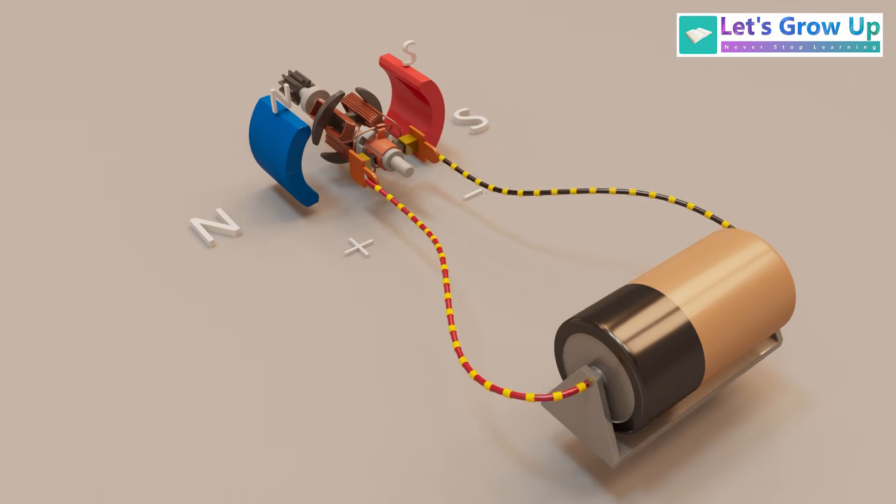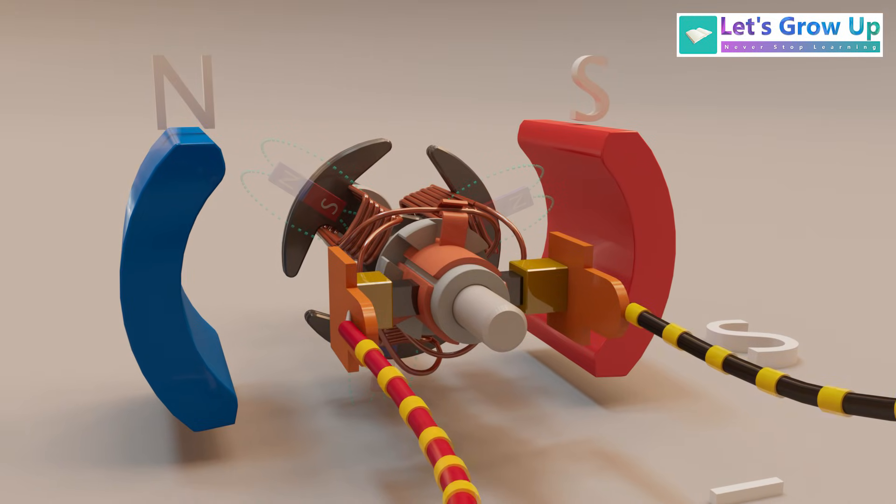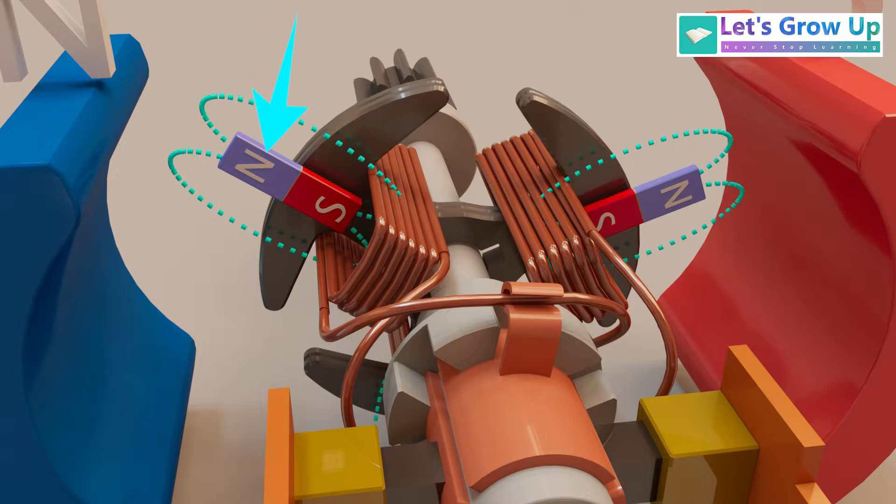When power is transmitted through the commutator to the armature windings, each coil creates its own magnetic field, according to the principles we discussed. For a given coil, let's say the outer part becomes the north pole, and the inner part becomes the south pole.